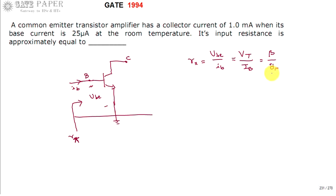Beta by gm, where gm is the transconductance which is ic by vt. If you are using this one you will get the same equation.